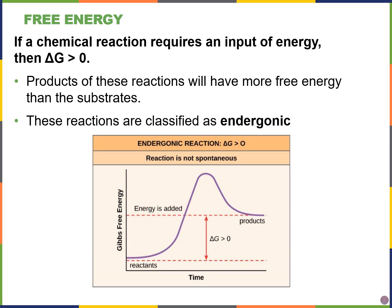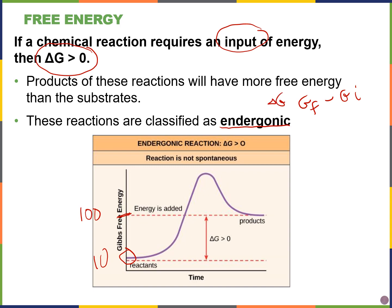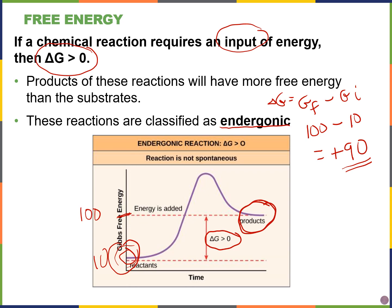If a chemical reaction requires an input of energy to happen, then delta G will be a positive value, and these are called endergonic reactions. Using the same numbers: if the initial Gibbs free energy is 10 and the final is 100, then ΔG = 100 − 10 = +90, which is positive. I have more energy at the end of the reaction than when I started, so delta G is greater than zero.